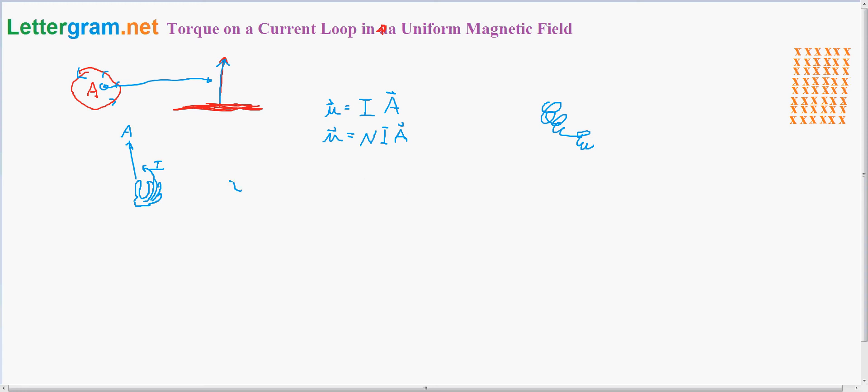To get the torque, you set that equal to the dipole moment, the magnetic dipole moment, the cross product of the magnetic field, or I A cross B.